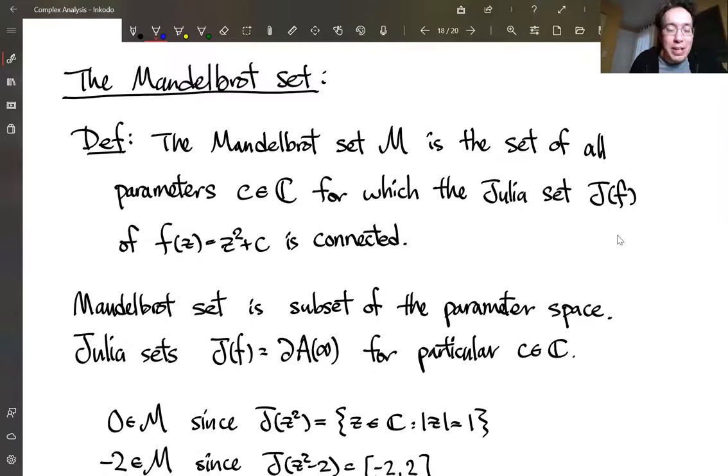So remember we defined it last time. The Mandelbrot set is set of all complex values c for which the Julia set appears connected. So for each complex number c, you can define a Julia set, which is the boundary of basin of attraction to infinity. And for that particular c, if the Julia set is connected, you're in the Mandelbrot set. If it's not, if it looks disconnected, when you try to plot it, it looks dusty, then it's not in the Mandelbrot set.